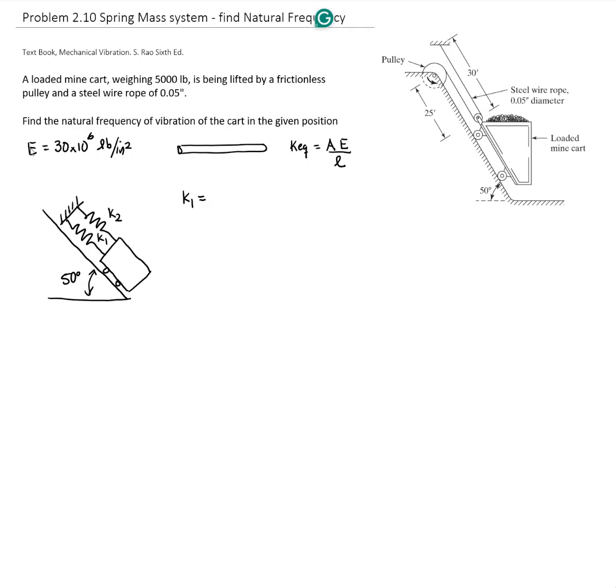For K1, we have the cross-sectional area times Young's modulus divided by length. Both ropes have a diameter of 0.05 inches, so the area will be π times radius squared times Young's modulus divided by length.